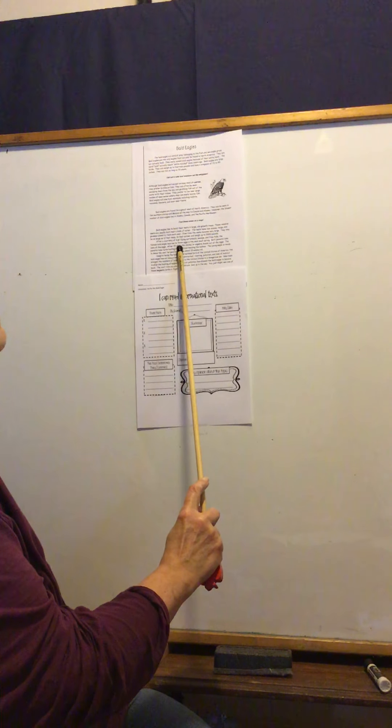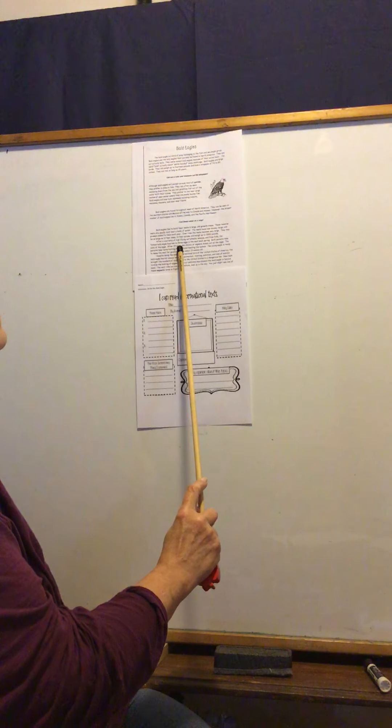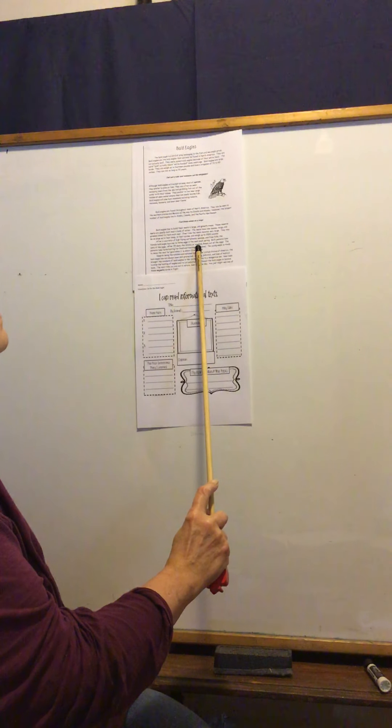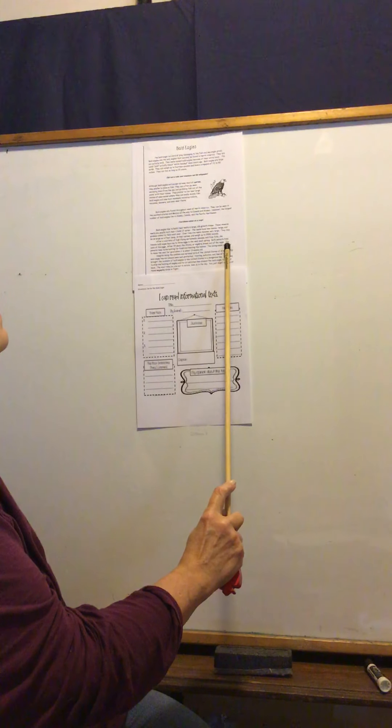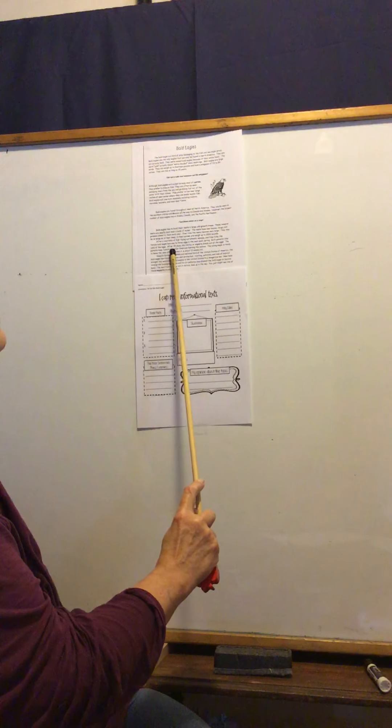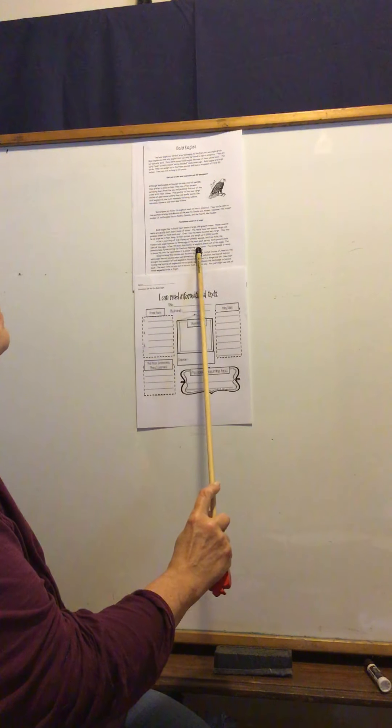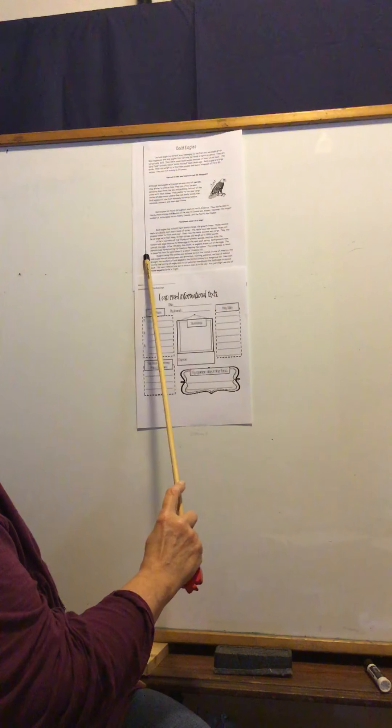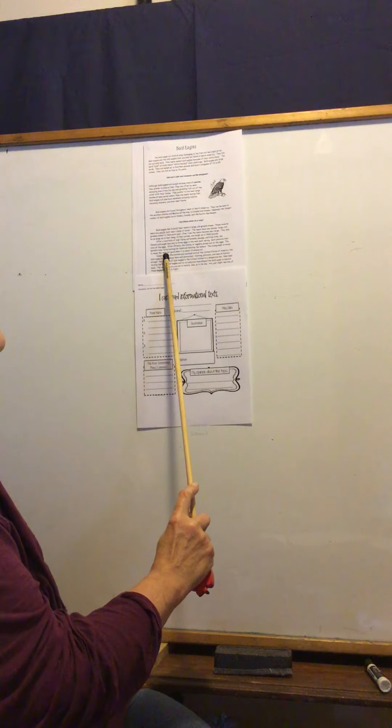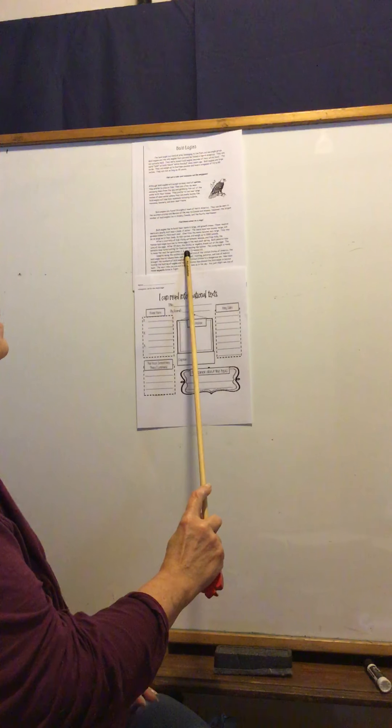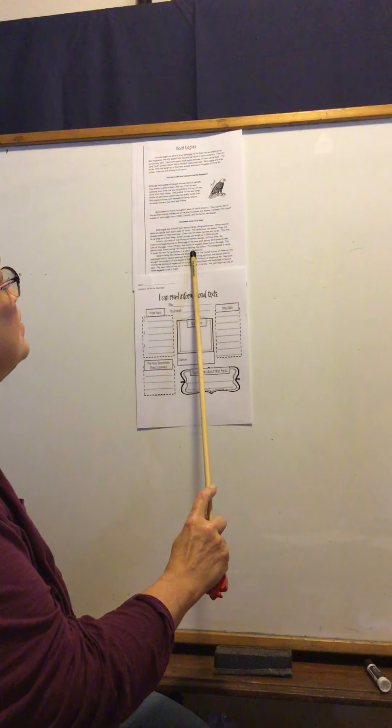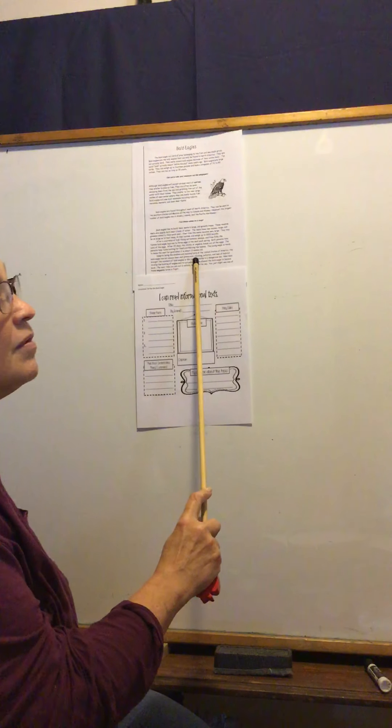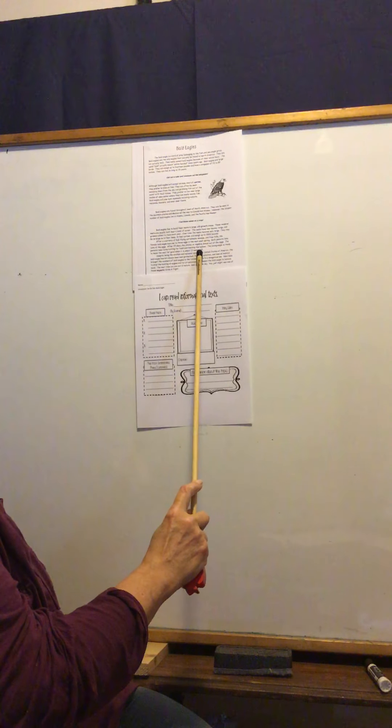After 35 days, a month and five days, the chicks or eaglets break out of the eggs. The parents take turns hunting for food and feeding the babies. The young eagle is ready to leave the nest for good when it is about 13 weeks old, about three months and a week old.